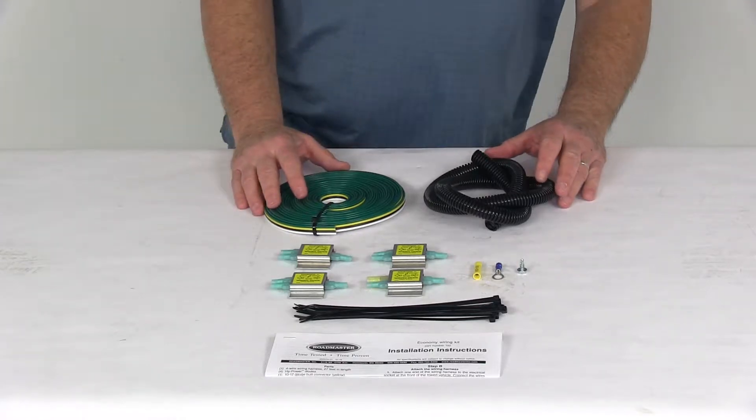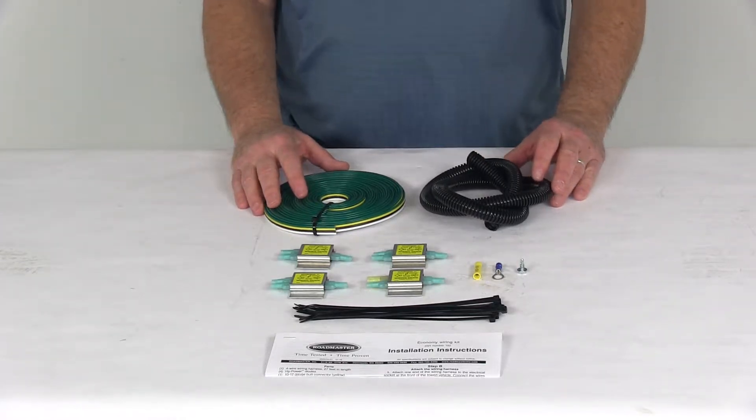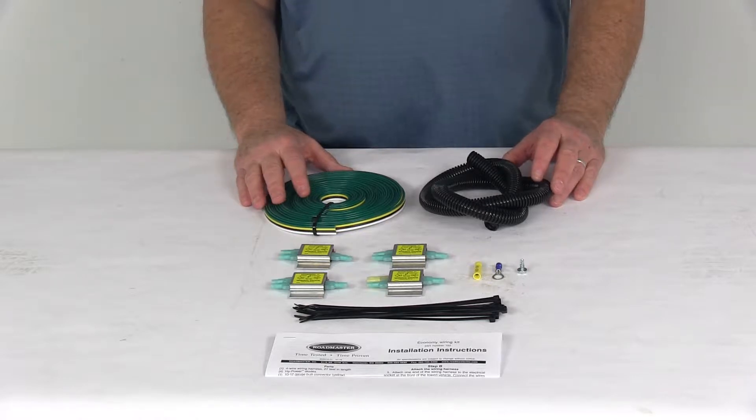Today we're going to take a look at the Roadmaster Universal High Power Diode Wiring Kit. This part will let you wire your vehicle to accept your RV's tail brake and turn signal lights for flat towing.